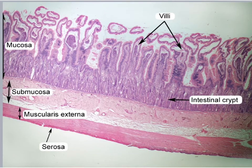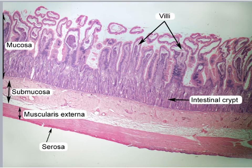Hi students! Welcome to Digestive System Lecture Part 3. If you recall in Part 2, we left off learning about the small intestines — the modifications of the small intestine to assist with absorption of nutrients. So far you've seen pictures of the small intestines in your book, but you haven't yet seen what it looks like underneath a microscope — the histology.